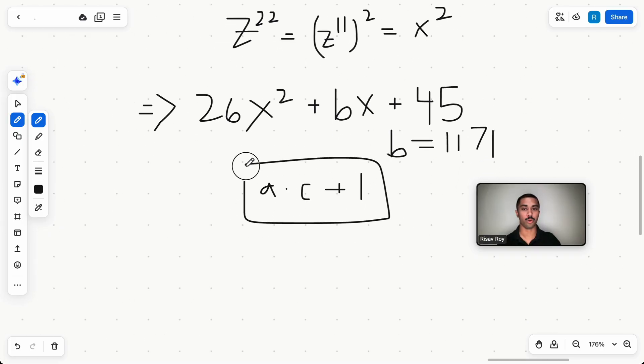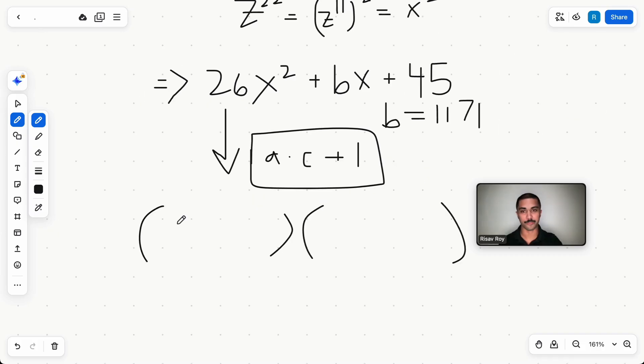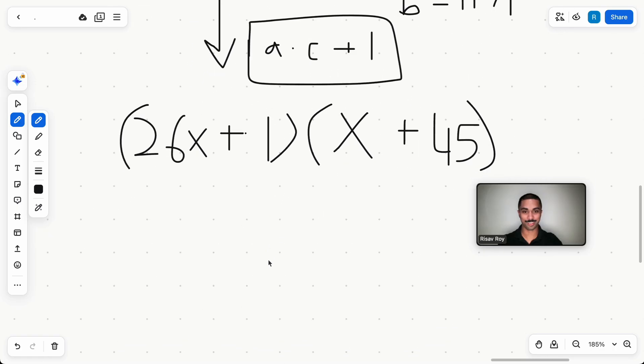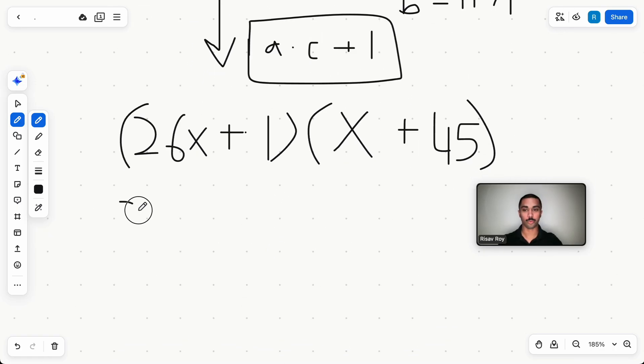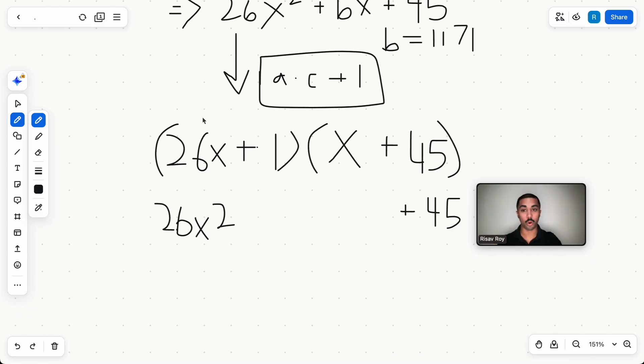But why does this trick even work? If you know how it works, it's going to be a lot easier to memorize on the test. Well, if I wanted to maximize the b value, I would want to put the 26 right here. And I don't want to put the 45 here. I want to put all of the 45 right here. And then I want to, I have to put an x right here. And I have to put a one. And if we distribute out this entire thing, we're going to get 26x squared, right? Because this distributes with this. And then at the end, we're going to get a 45.